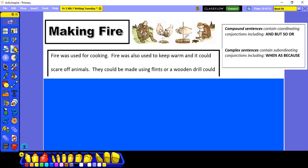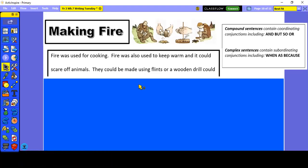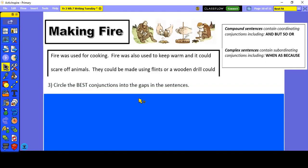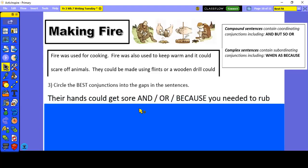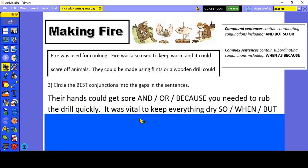So, your job today is to do just what I've demonstrated there, but this time using some sentences about making fire. Follow the instructions. Number one, underline all the conjunctions. Number two, colour code. And you can use your own colour code. There's an additional activity here. Number three, it says circle the best conjunctions into the gaps in the sentences. So, their hands could get sore and you need to rub the drill quickly. Or, the hands could get sore OR you need to rub the drill quickly. Their hands could get sore because you needed to rub the drill quickly.